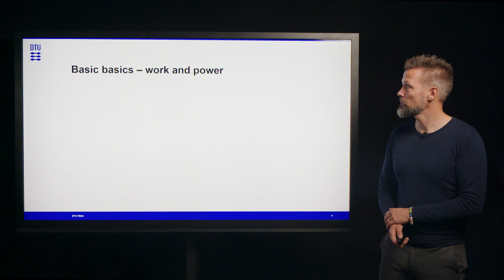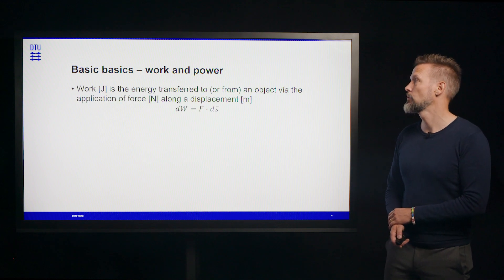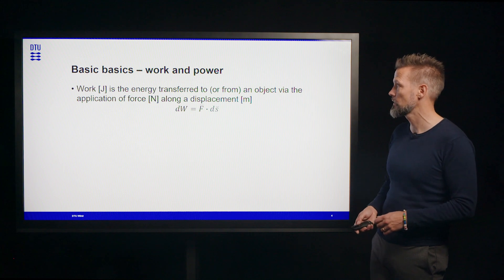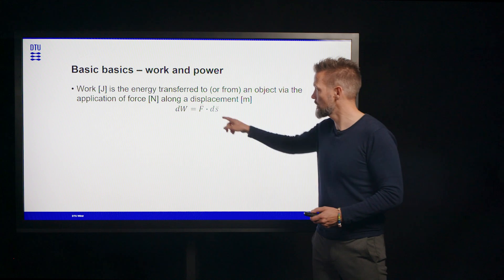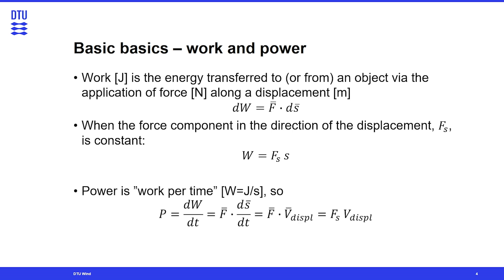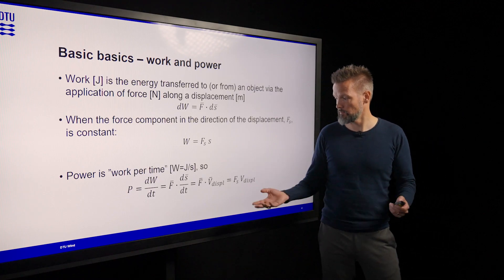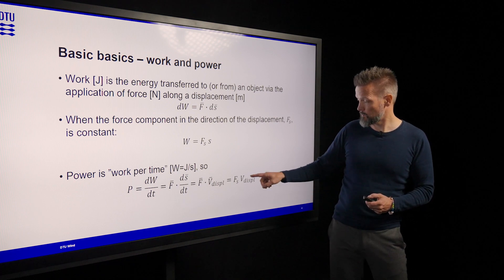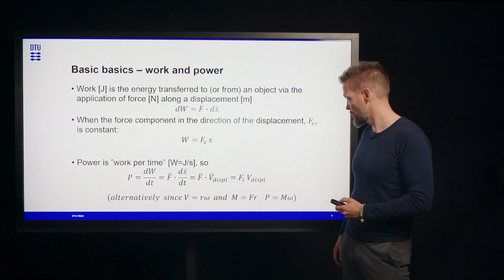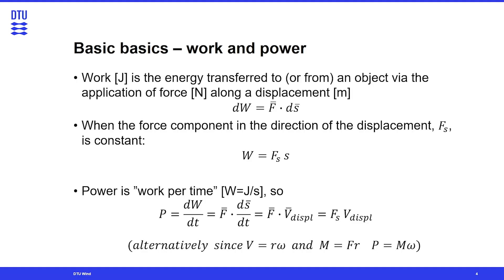Starting out I'd like to just jump to the very basic basics that you already do know. So if we are to express how to calculate the work which is the energy transferred to an object via application of a force, this is done using this dot product between a force and a displacement. And when the force component in the direction of the displacement fs is constant then the work is the product of the force and the displacement. And since power is work per time then you just take the time derivative of it and you find out that the power is the displacement velocity times the force in the direction of the displacement. And this is equivalent to power being equal to a torque times rotational velocity.